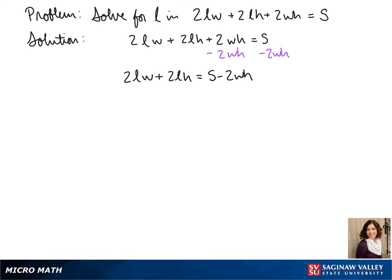We factor out an L from both of our terms here. So now we have L times the quantity 2W plus 2H equals S minus 2WH.